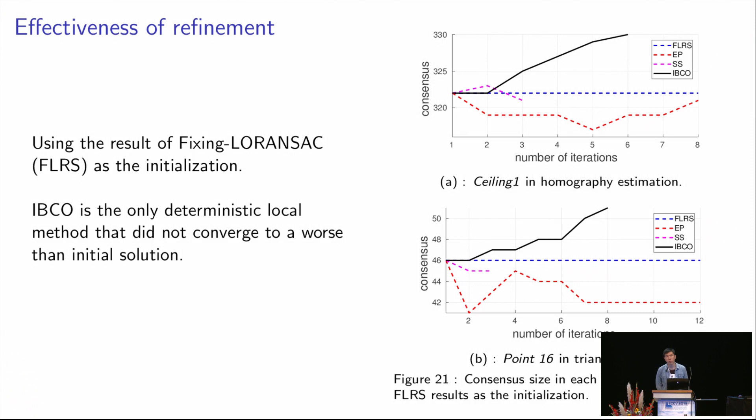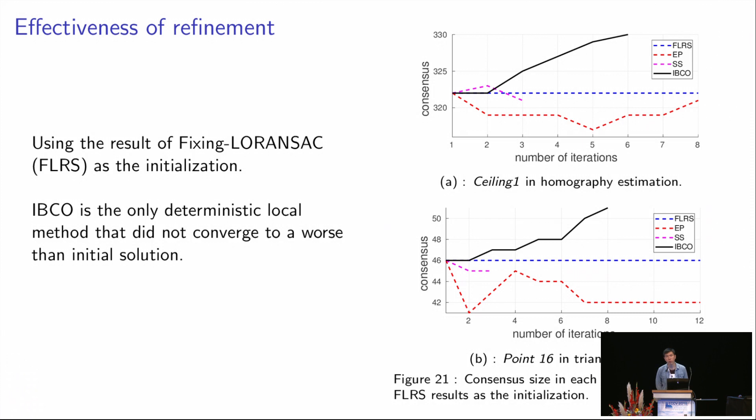In conclusion, we have proposed a biconvex optimization approach for consensus maximization that is deterministic and efficient. And more importantly, it does not rely on relaxation. At this stage, we might want to ask a question: since we already got deterministic and efficient, can we have something more, such as some global optimality along with them? If you want to know the answer, please wait for my next talk. Thank you.